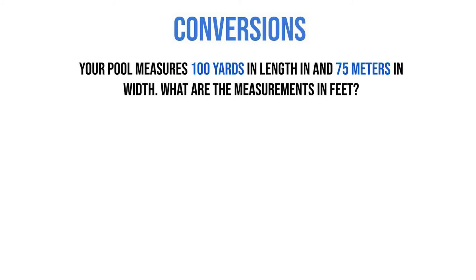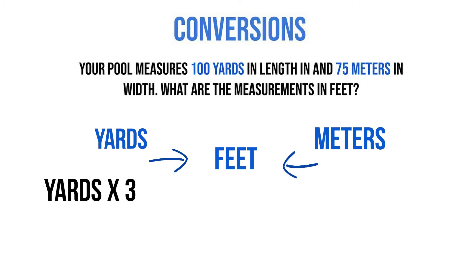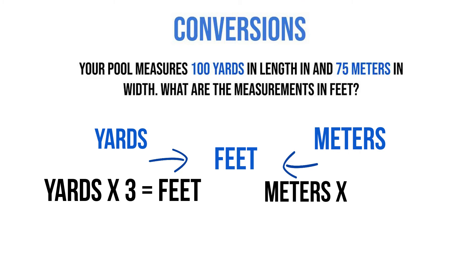Now we're going to learn how to convert yards and meters into feet. These are our distance conversions. Let's read our problem: Your pool measures 100 yards in length and 75 meters in width. What are the measurements in feet? Here are our two conversions: yards times 3 gives us feet, and meters times 3.28 gives us feet.